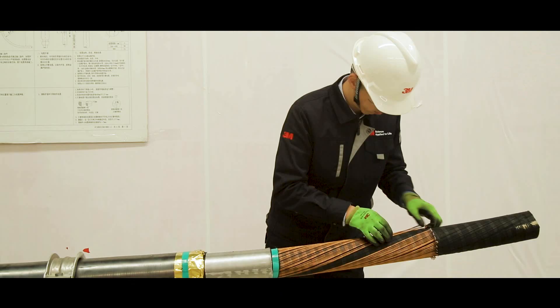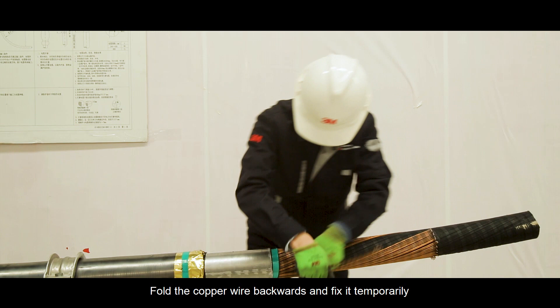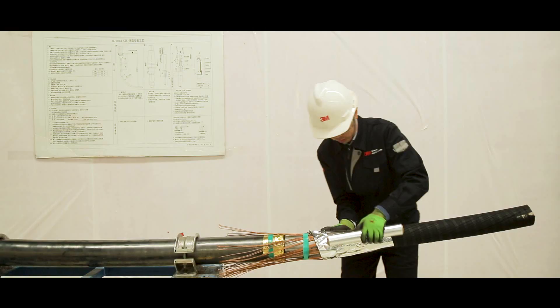Cut the copper wire leaving 500mm. Fold the copper wire backwards and fix it temporarily to the lead sheath using PVC tape.